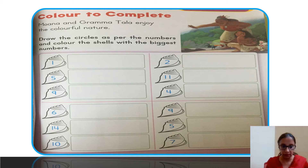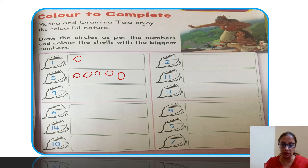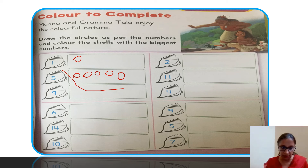In this row, there is one shell — so one circle. There is a shell with five — so we make five circles: one, two, three, four, five. Similarly, for all shells, draw as many circles as the number written. Then, whichever shell has the biggest number gets colored. The numbers are one, four, fourteen — fourteen is the biggest, so we color the shell with number fourteen.